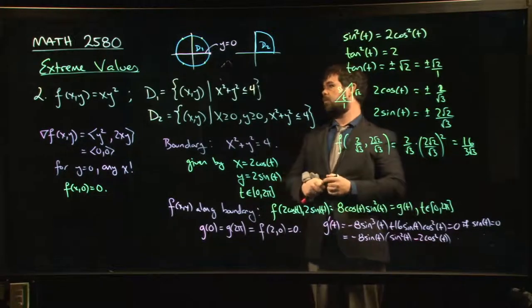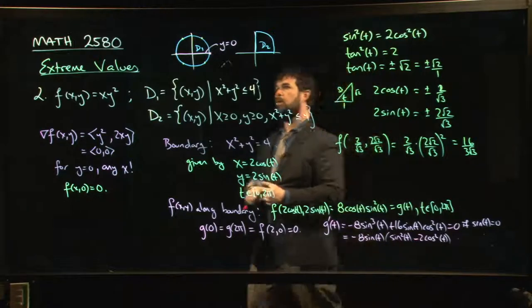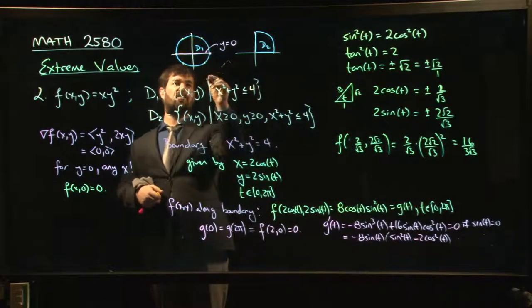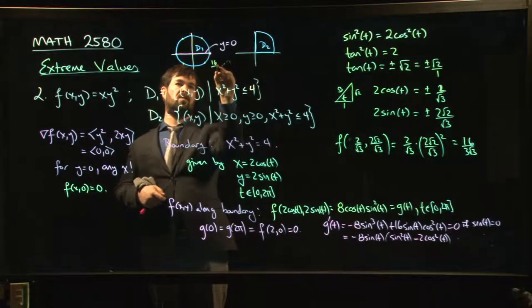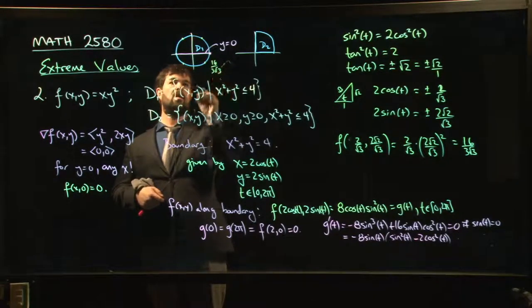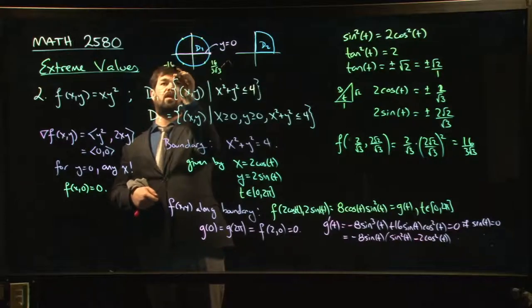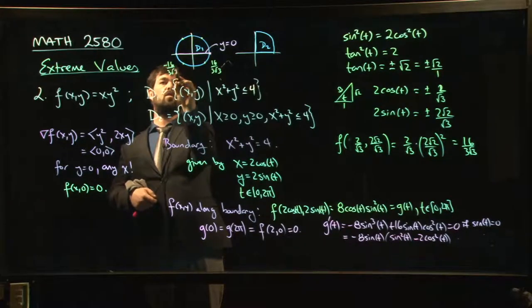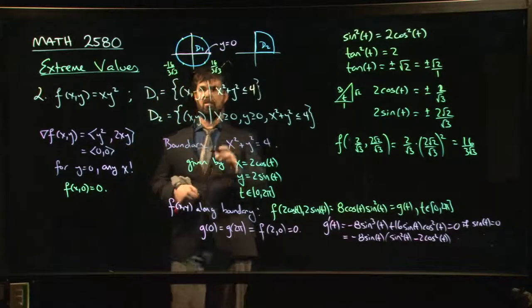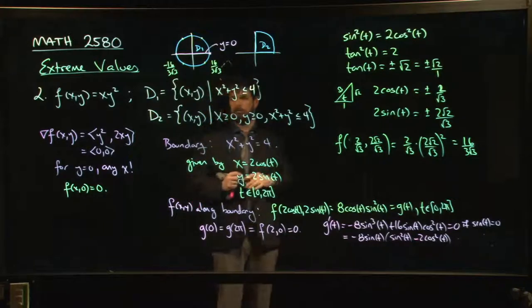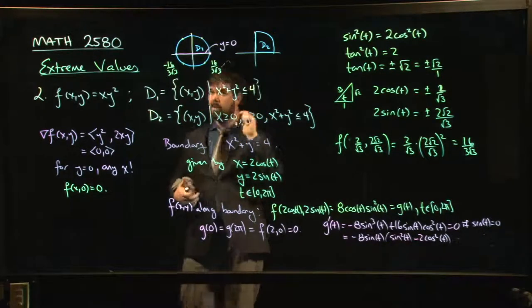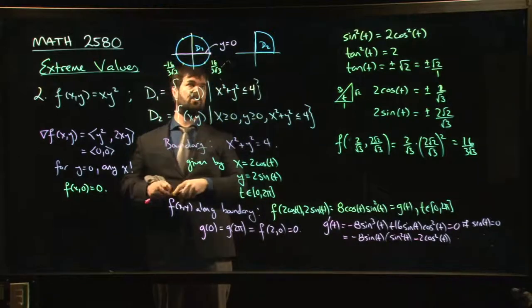And now you count for signs, positive or negative, and you can work out, well, okay, at these two here where x is positive, that's where you're going to get your max, 16 over 3 root 3. Over here, where x is negative, you're going to get your min, minus 16 over 3 root 3. And you have sort of this local minimum along 0. So you get a max value, you get a min value, and in fact, it occurs at two places.